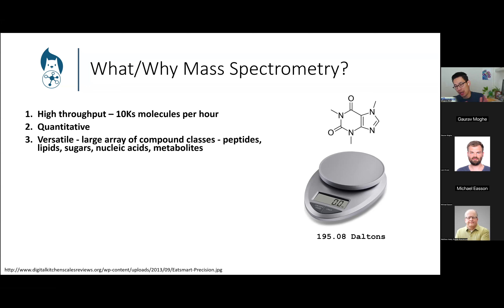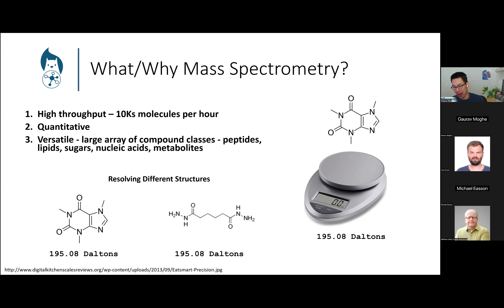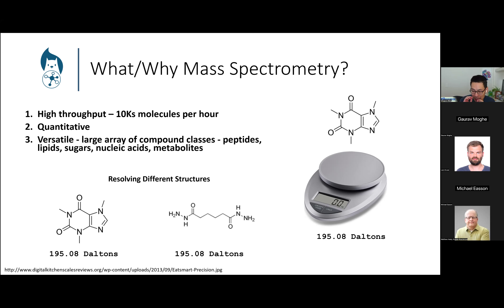If we weigh a particular molecule — say caffeine — we can see it weighs 195 Daltons, simply the summation of the masses of the individual atoms in the 2D structure. But one problem with purely weighing a whole molecule is that there may be two different isomers with the exact same mass that are indistinguishable. Understanding 2D structure is key to understanding function, biosynthesis, and downstream reasoning about chemistry.